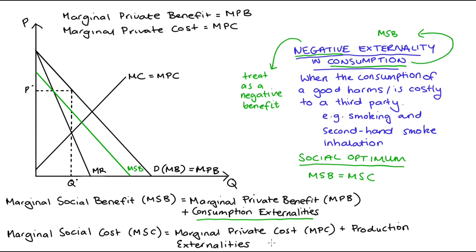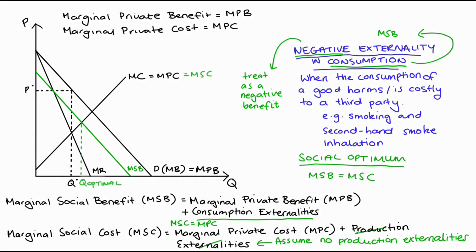When thinking about deadweight loss from a monopoly with externalities, we consider deviations from the social optimum. Typically, when we have a consumption externality, we assume no production externality, so marginal private cost equals marginal social cost. Therefore, our social optimum — where MSB equals MSC — is at the intersection of our green marginal social benefit curve and the marginal private cost curve.